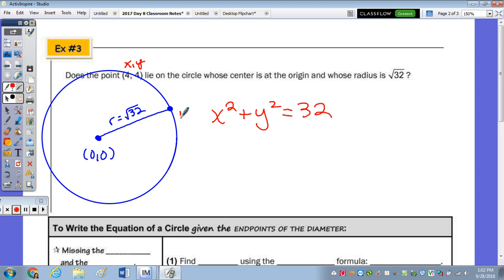So if I write the equation, whose center is at the origin, that would be x squared plus y squared equals, if the radius is radical 32, we square radical 32 and we get 32. So we start by writing the equation, and then to see if the point 4, 4 lies on the circle, we plug it in. So is 4 squared plus 4 squared equal to 32? Yes. So does the point, you just want to make sure you go back and answer yes. So 16 plus 16 is equal to 32, so the answer is yes.